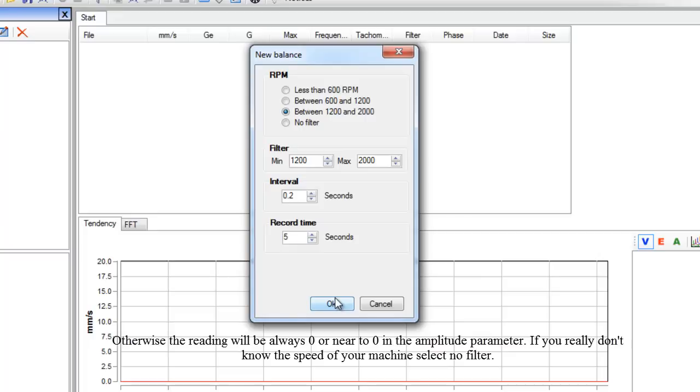Otherwise the reading will be always 0, or near to 0, in the Amplitude parameter. If you really don't know the speed of your machine, select No Filter.